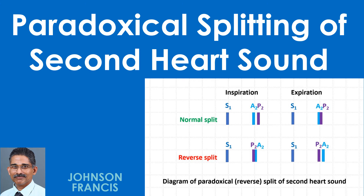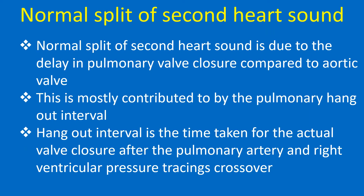This is a discussion on paradoxical splitting of the second heart sound. Normal splitting of the second heart sound is due to the delay in pulmonary valve closure compared to the aortic valve. This is mostly contributed by the pulmonary hangout interval.